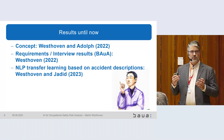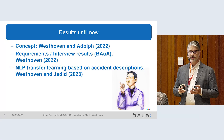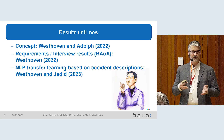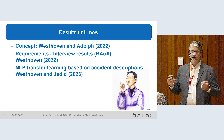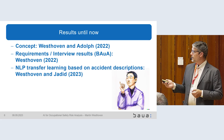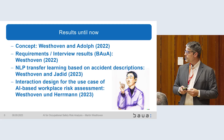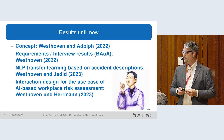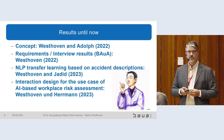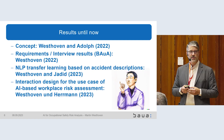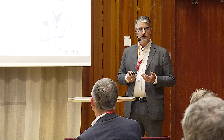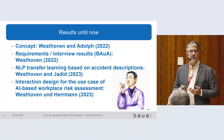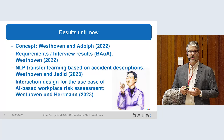For high-risk workplaces where we know there is a risk, there is a detailed workplace description. For all other workplaces, it's just a checklist where the effort was kept low. Interaction design is really complex because we have to address very different kinds of problems — like how do I react, or can I react at all if there's an error in the system, and can I correct the system.